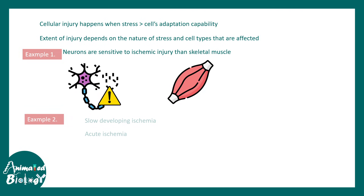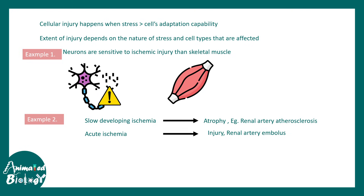There could also be the duration of the stimulus that leads to different degrees of injury. For example, slow-developing ischemia and acute ischemia have different outcomes. Slow-developing ischemia leads to atrophy of the renal artery, whereas acute ischemia leads to renal artery embolus. We can understand the diversity of outcomes based on the intensity and the duration.